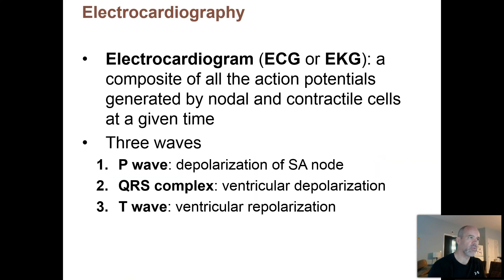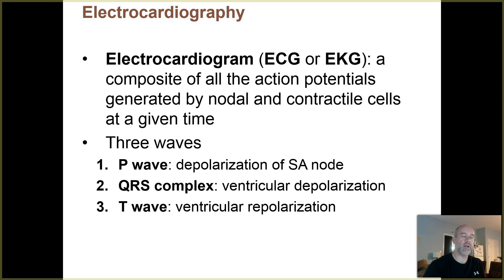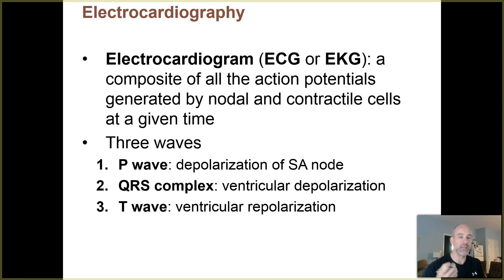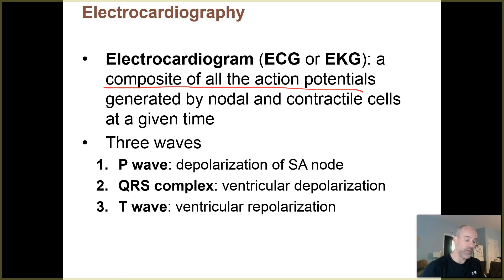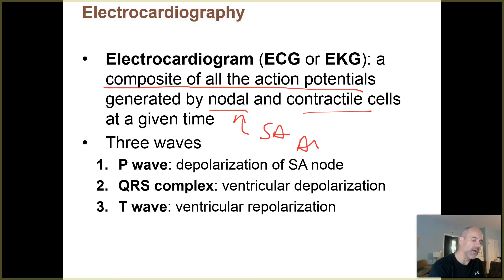Of course, we've all heard of these before. These are measurements that are made of the electrical activity around the heart. When you see the tracing from an electrocardiogram or an ECG, it is not a measurement of contraction of the heart — it's not the muscular beating. It's actually the electrical changes that take place. It's really a composite of all the action potentials being generated around the heart by the nodal and contractile cells. Nodal here refers to the SA node and the AV nodes — those cells within the intrinsic conduction system.